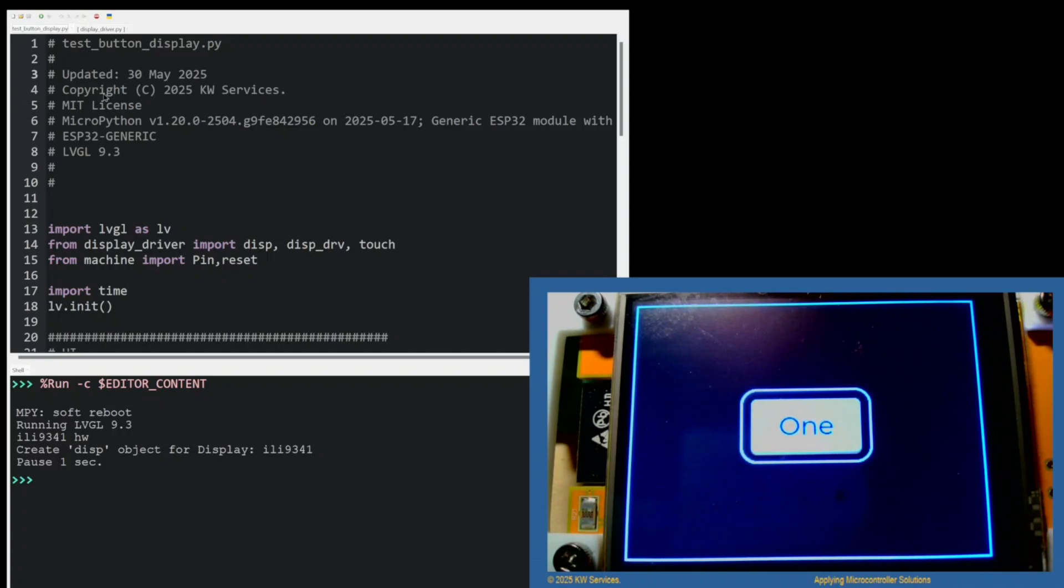On the CYD device, the backlight was turned on and a button is displayed in the center. If you press the button with a stylus, then a message is printed in the shell of THONI. Let's do that.